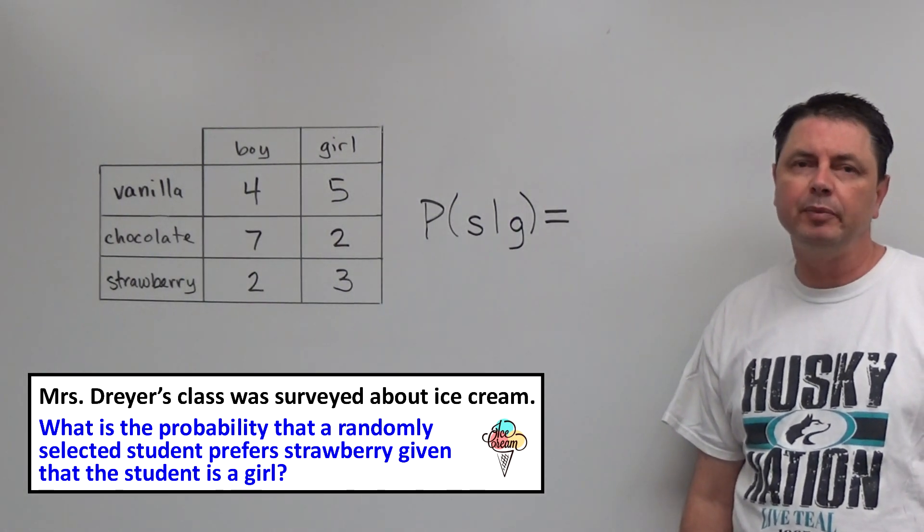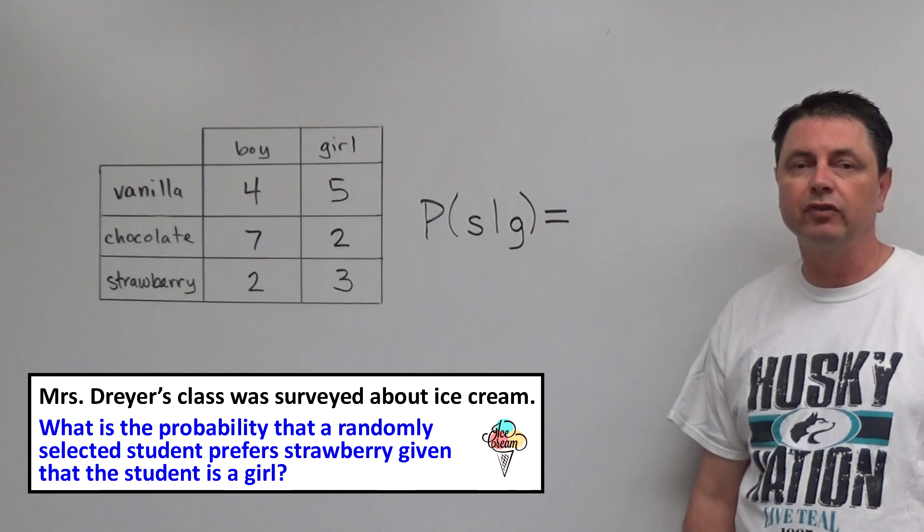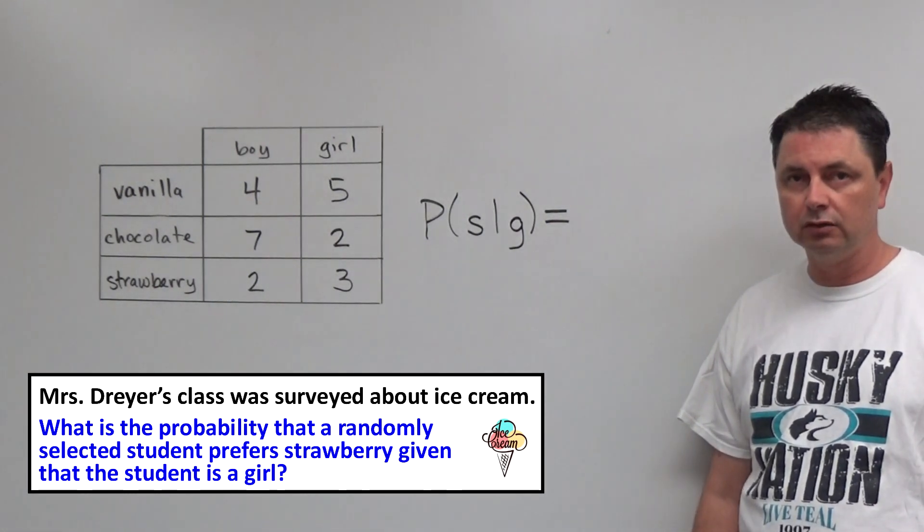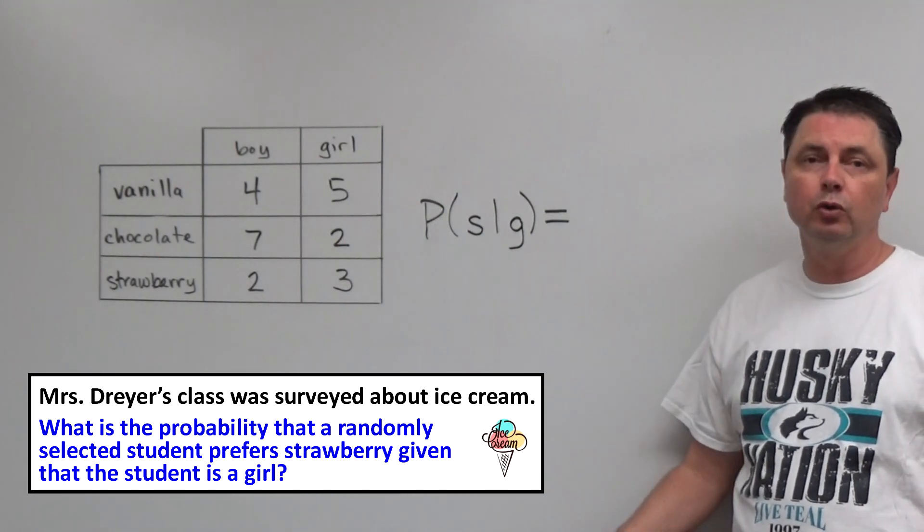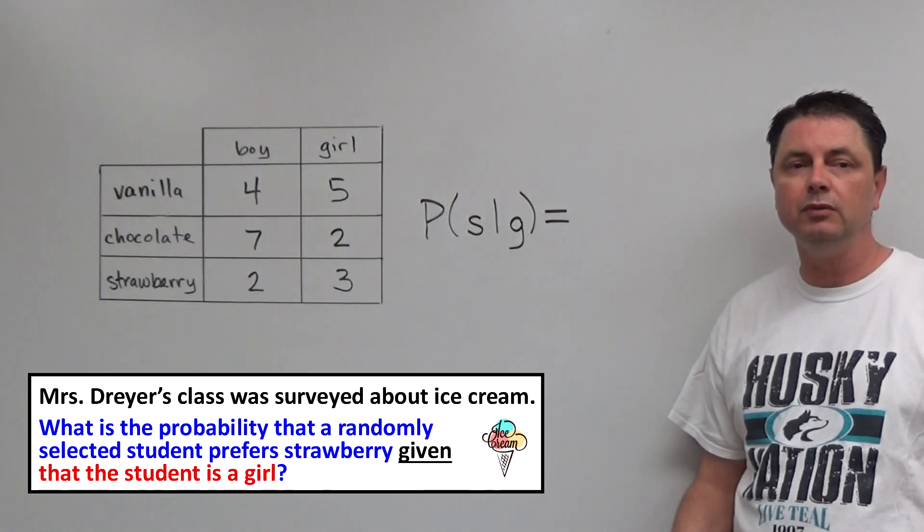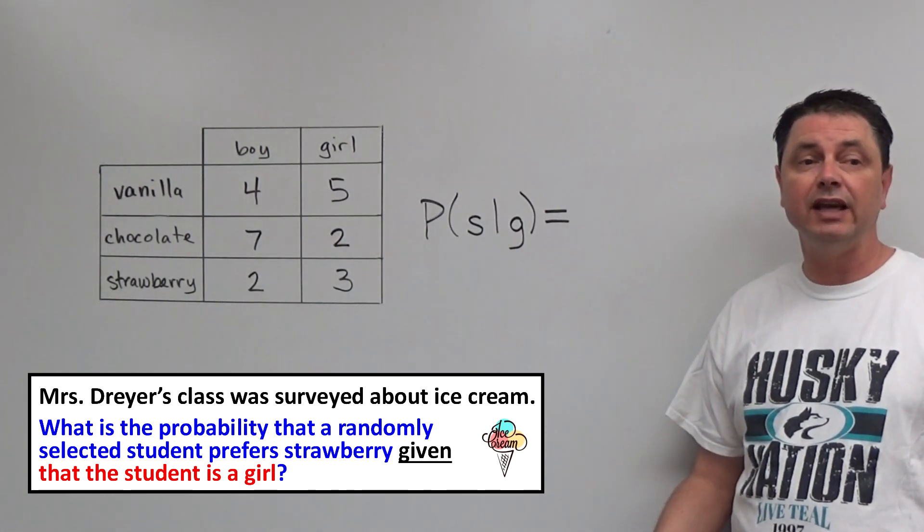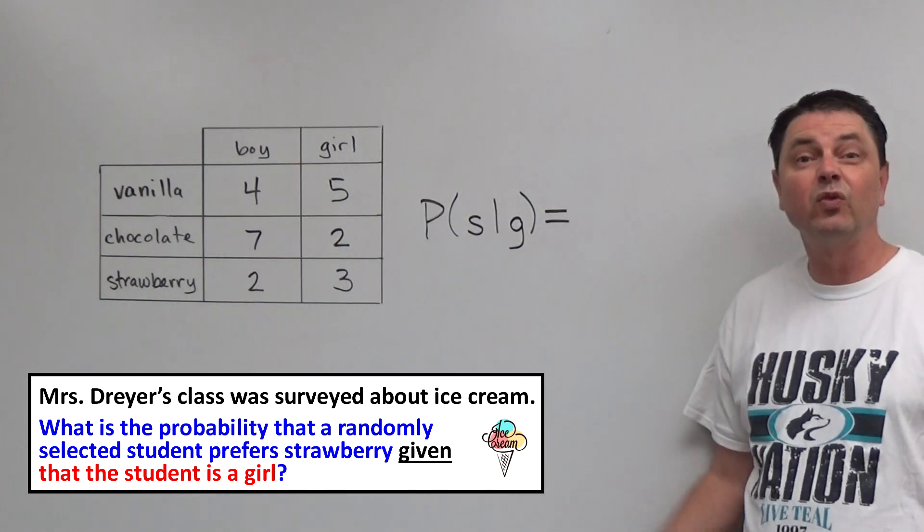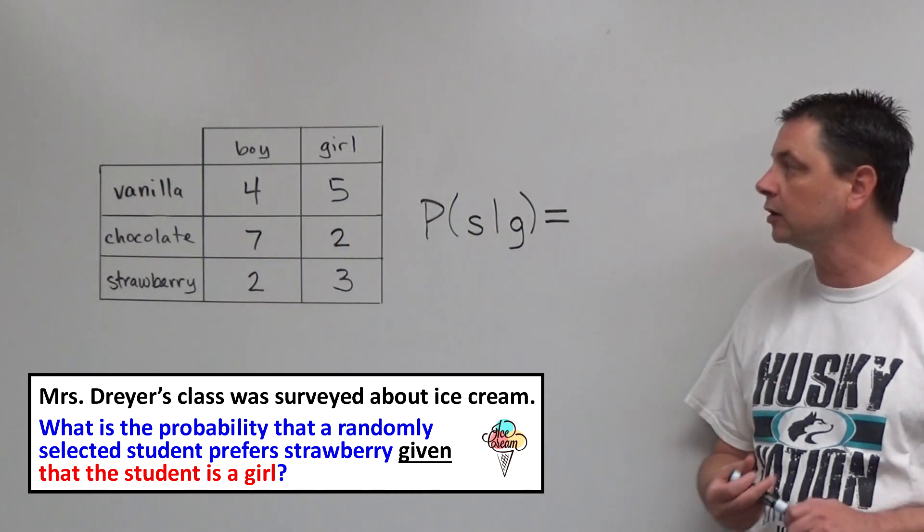What is the probability that a randomly selected student prefers strawberry given that the student is a girl? So again, we go looking for the condition. We find the word given in the problem. After that, it says that the student is a girl. So girl is our condition for this problem. Girl is all that matters.